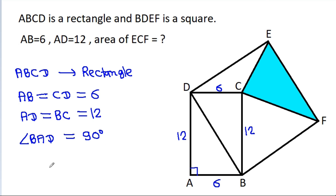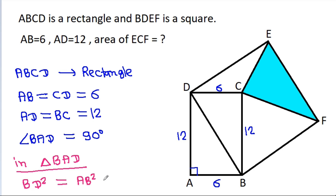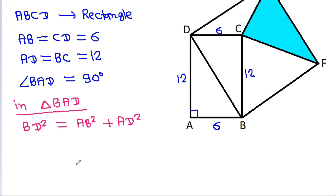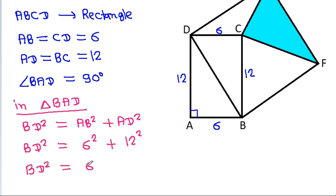And angle BAD is 90 degrees. So in triangle BAD, BD² will be equal to AB² plus AD². BD² is equal to 6² plus 12². And 12 is 6 times 2, so BD² equals 6² plus (6×2)².